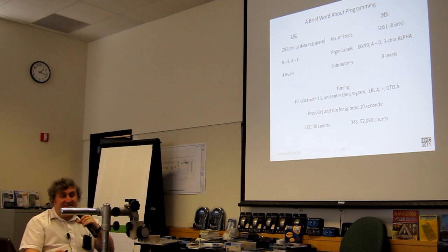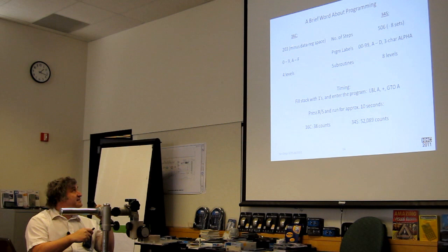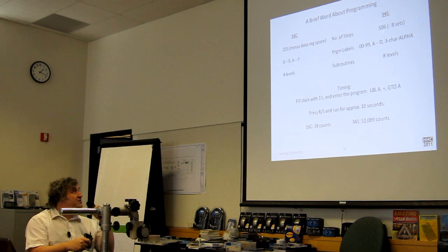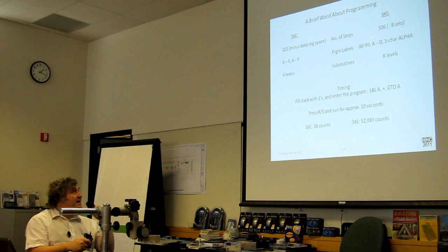This is my last slide. I just wanted to say a little bit about programming. Again, 203 steps in the 16 minus the space occupied by storage register. You've got program label, label 0 to 9, A to F, and four levels of subroutine. 34S, of course, 506 steps times at least eight sets. Program label 0 to 99, A through D, and three character alpha, and eight levels of subroutine.